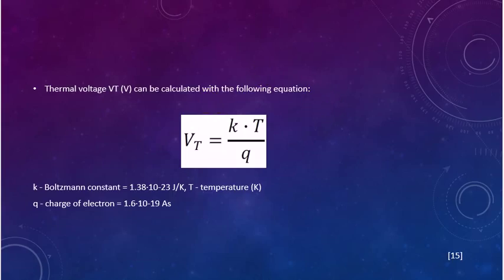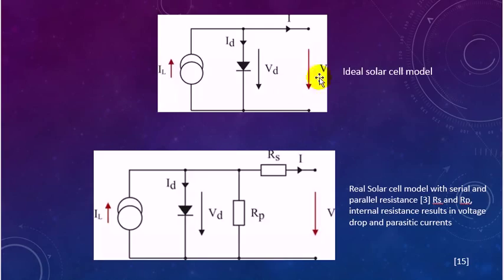The thermal voltage can be calculated with the following equation. This is the ideal solar cell model. The next figure represents the real solar cell model with series and parallel resistance. RS and RP internal resistances result in voltage drop and parasitic current.